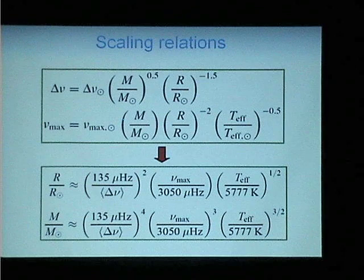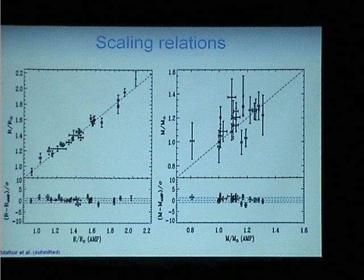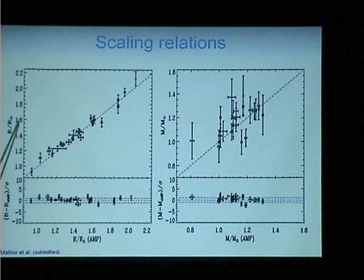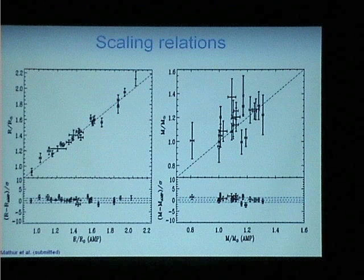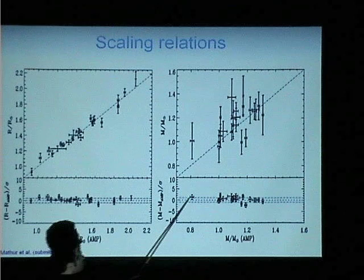Here's an initial look at how those scaling relations do against detailed modeling, from a paper soon coming out from Mathur and others, based on detailed modeling of a couple dozen Kepler stars. The top panel shows radius from scaling relations versus radius from detailed modeling — both absolute values and differences in units of uncertainty. There's very good correspondence between what scaling relations give and what we get from detailed modeling of individual frequencies. For mass, the stronger dependence in the scaling relation exponents gives more scatter, but we're still within our stated uncertainties.